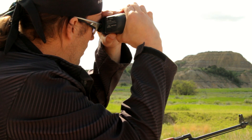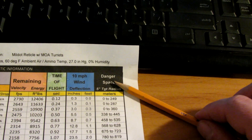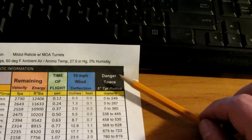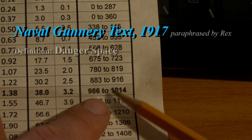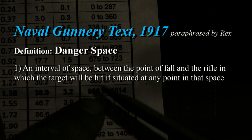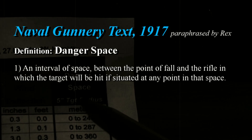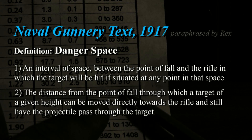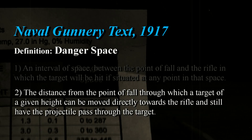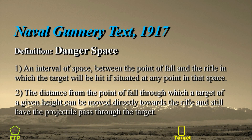On our secondary functions tables that we discussed, we mentioned something called danger space. Danger space is quite simple — it's going to help us determine an allowable error for range determination. If you look in the naval gunnery text from 1917, it defines it as an interval of space between the point of fall where the round hits the ground and the rifle in which the target will be hit if situated at any point in that space. Another definition is the distance from the point of fall through which a target of a given height can be moved directly towards a rifle and still have the projectile pass through the target.